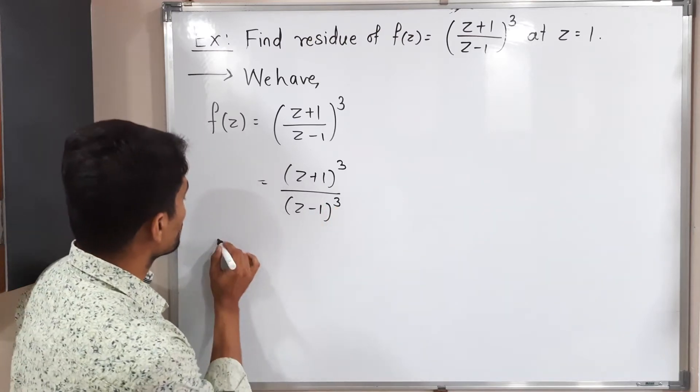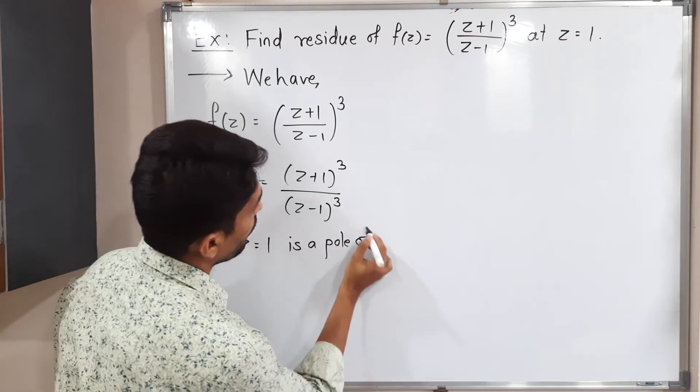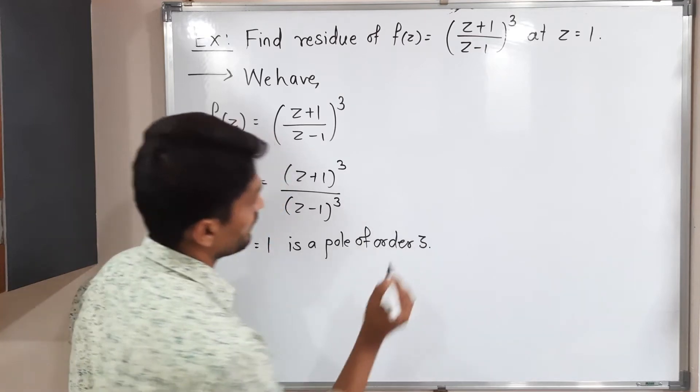Let me write that. Therefore, z is equal to 1 is a pole of order 3.